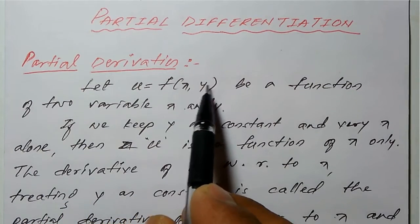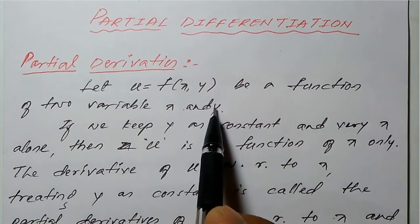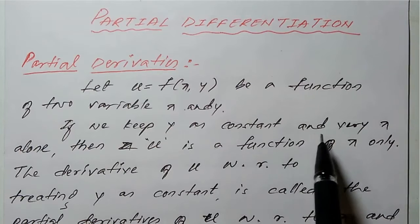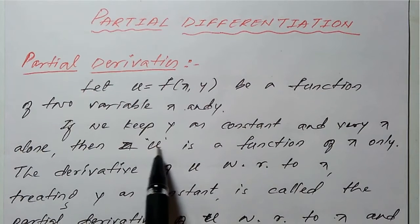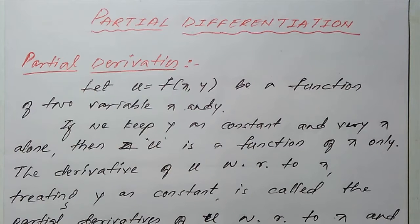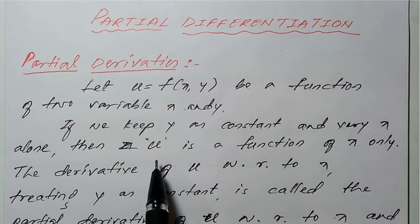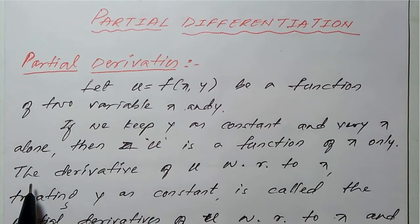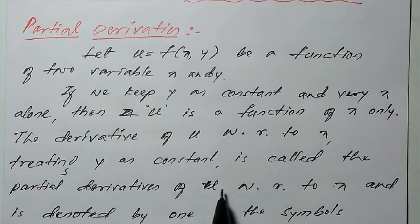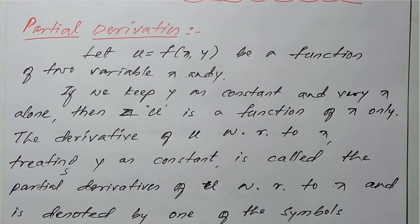Let u be a function of two variables x and y. If we keep y as a constant and vary x alone, then u is a function of x only. This means if I want to differentiate u with respect to x, we consider y as a constant, giving us the partial derivative of u with respect to x. Similarly, if we want the derivative of u with respect to y, we treat x as a constant — that is called the partial derivative of u with respect to y.